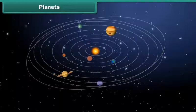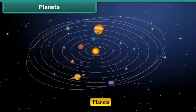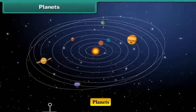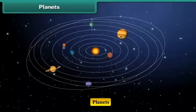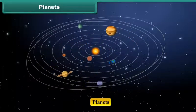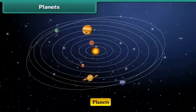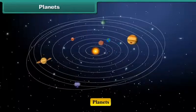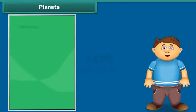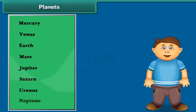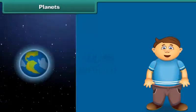Now we move on to planets. Before some time, Pluto was considered the ninth planet of our solar system, but according to recent research, it is no more counted as the ninth planet. So there are only eight planets in our solar system: Mercury, Venus, Earth, Mars, Jupiter, Saturn, Uranus, and Neptune.